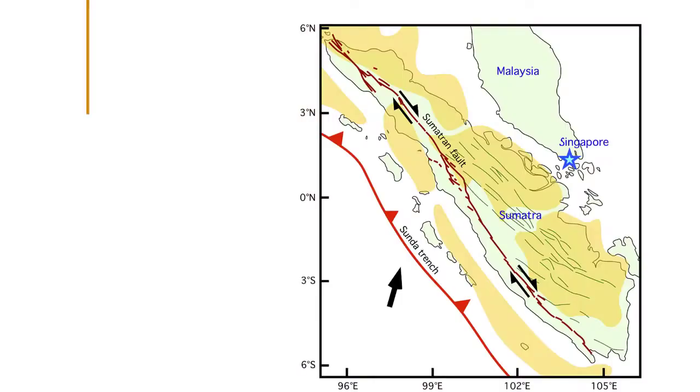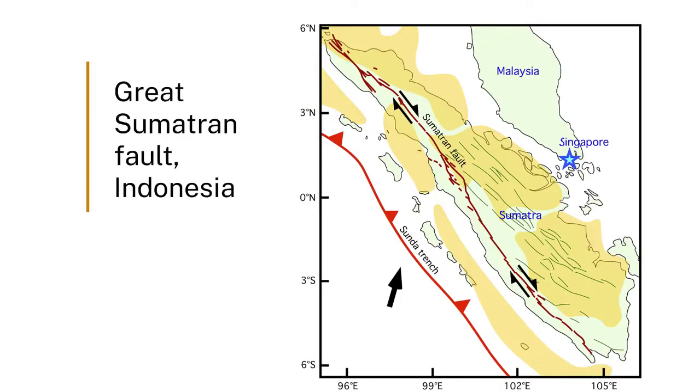All of the big earthquakes on Earth happen at convergent boundaries. There are other places where we get them — for instance, at divergent boundaries there are small earthquakes — but the big ones, like the San Andreas Fault, the fault in Indonesia that made the tsunami, and the Alpine Fault in New Zealand, are all at convergent boundaries.